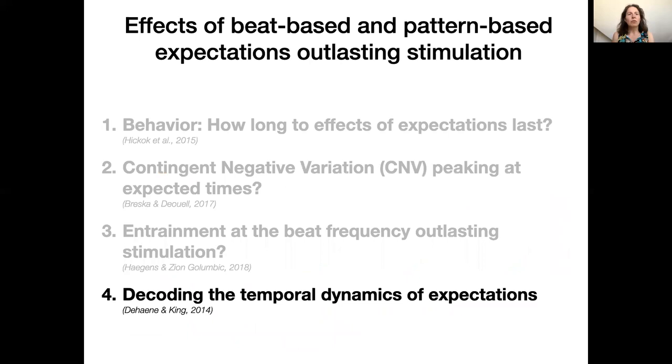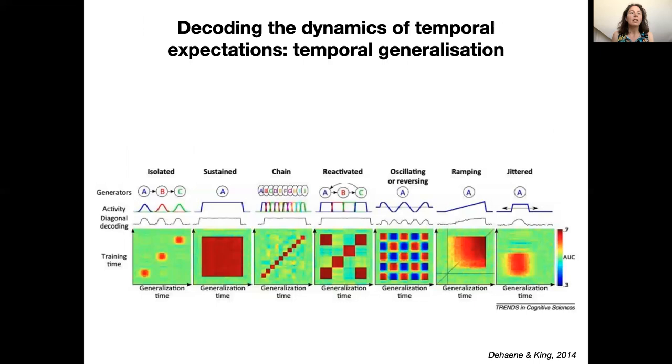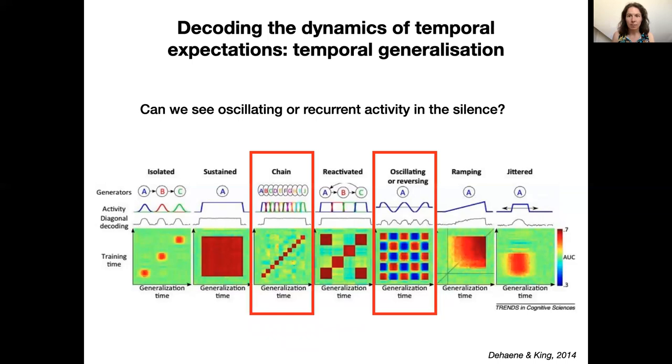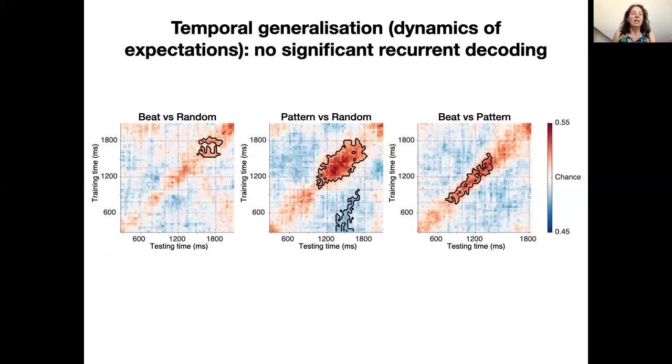In addition to the frequency tagging analysis, we also looked at the data using multivariate decoding. In the decoding analysis, for each time point in the silence, we tested whether we could use a classifier to decode above chance which type of rhythm participants had listened to before. This graph, from an influential paper by Dehaene and King, shows examples of patterns that can be expected in decoding analyses based on different types of underlying neural activity. Often decoding is best when the training time for the algorithm, on the y-axis, and the testing time, on the x-axis, are identical. You can then see clear above chance decoding on the diagonal of a plot, such as here. However, assuming that activity would be similar at all expected moments in time, such as on every beat, we could predict that decoding would also be above chance if we train at a beat and test at a different beat, even if it is at a different time. This would result in an oscillating pattern, as is depicted here. Such a pattern would show lasting effects of expectations in the silence.